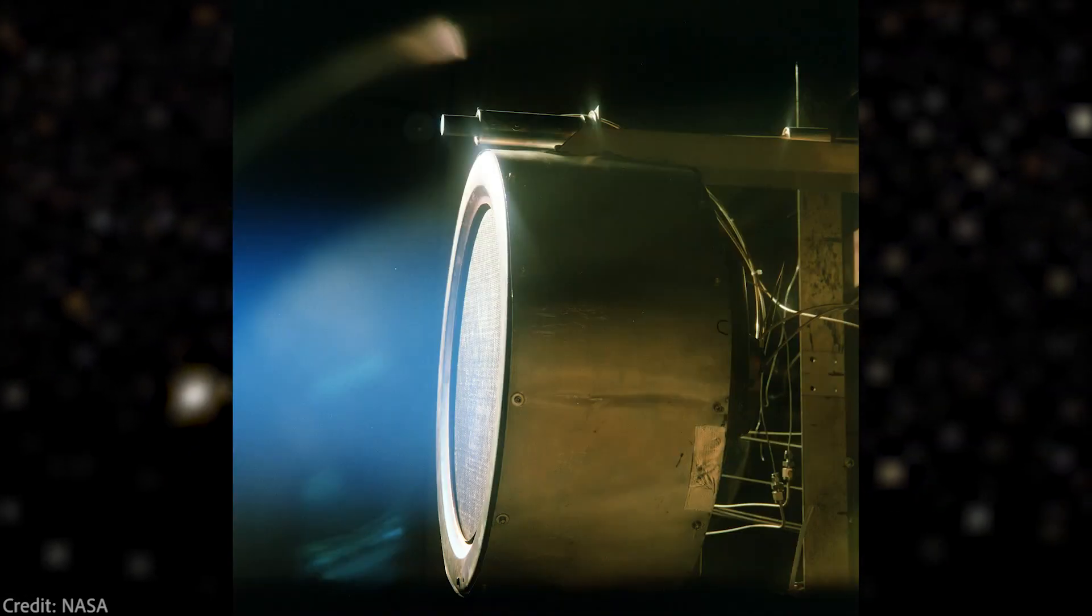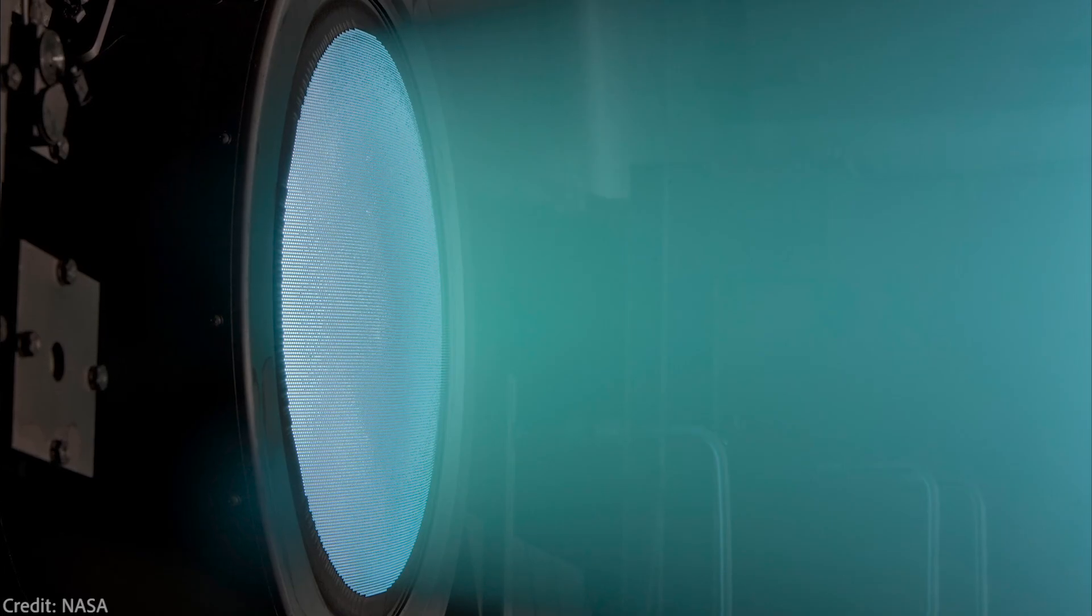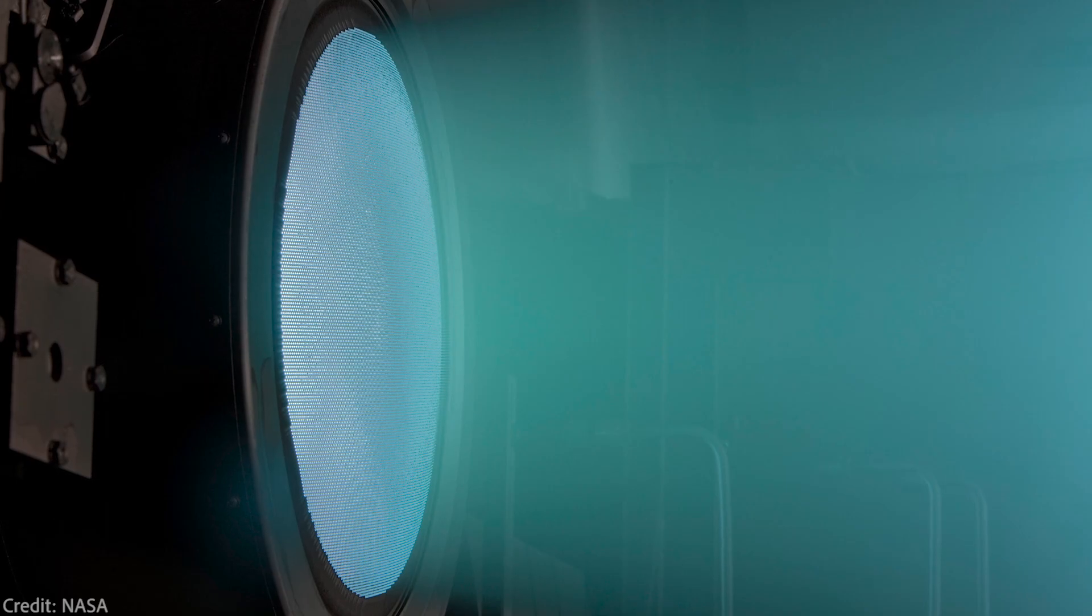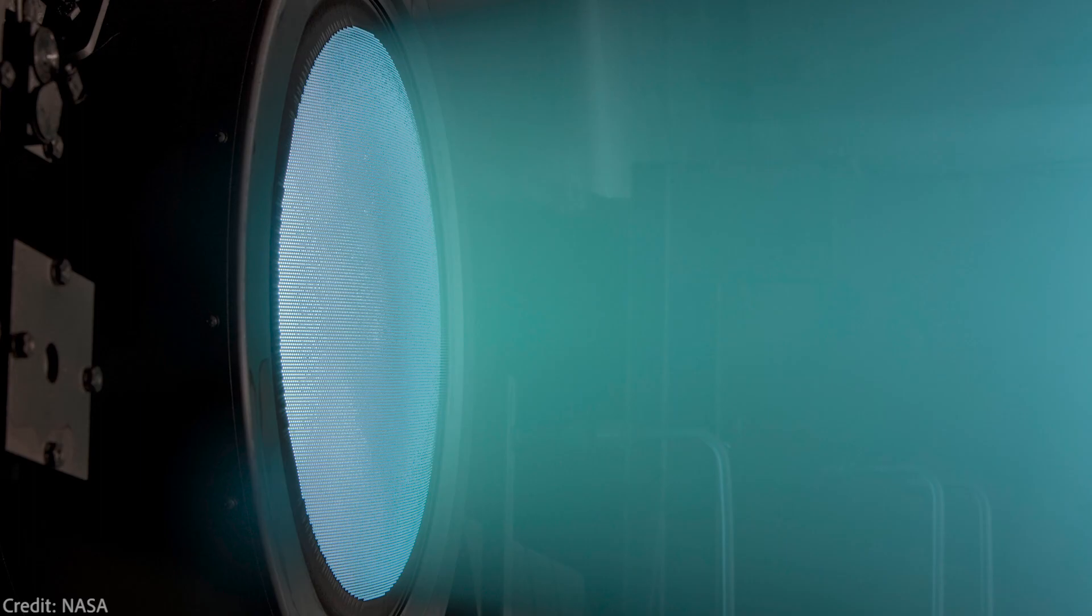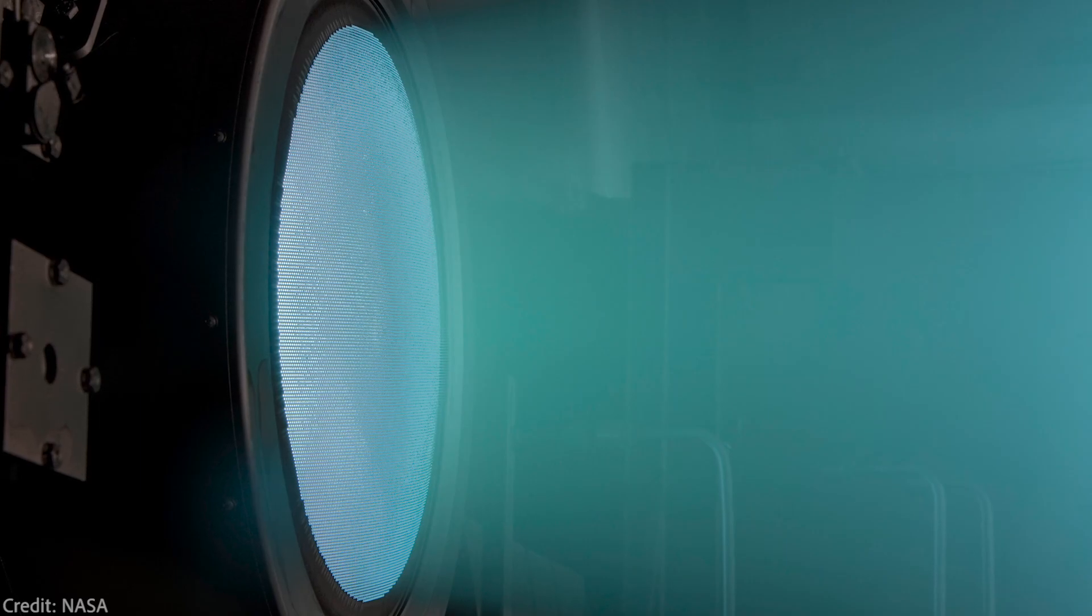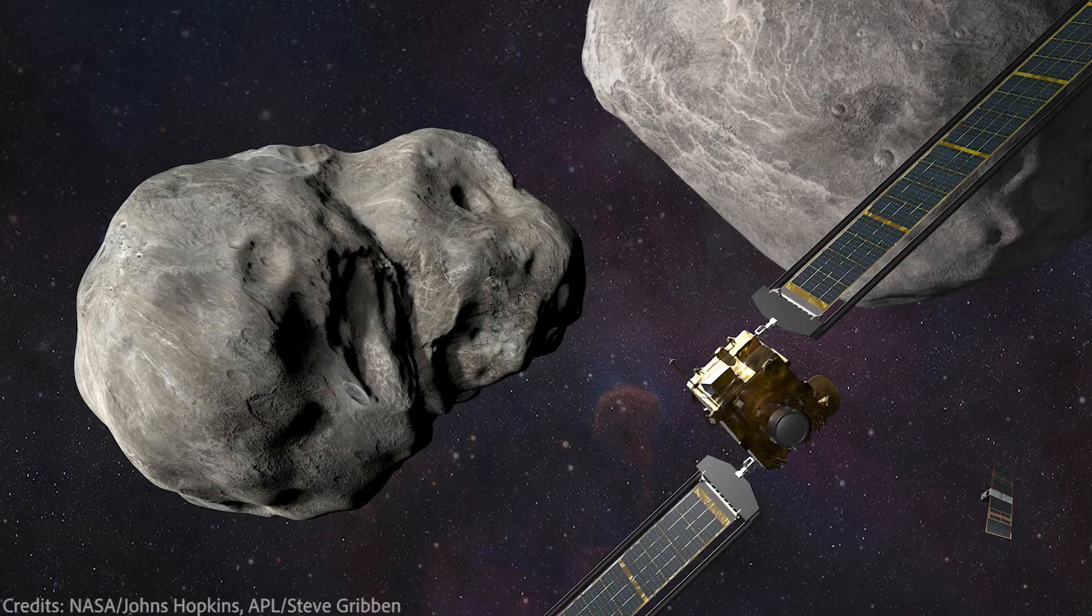The next generation of NASA's ion thrusters is called, well, NEXT. It provides about 236 millinewtons of thrust, it has higher specific impulse, longer lifespan, that is enough for a six-year mission. And there is already a spacecraft with those thrusters in space, I'm talking about DART mission.